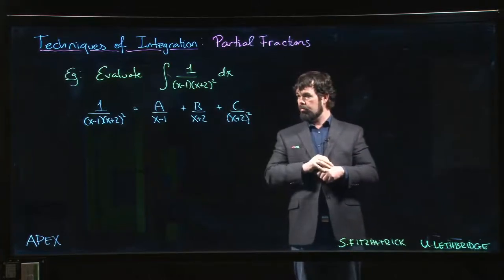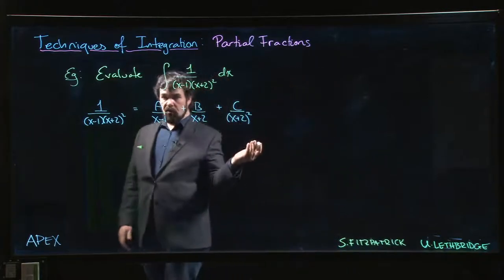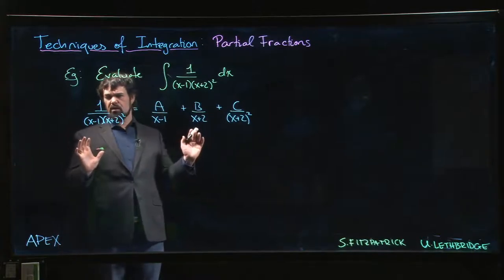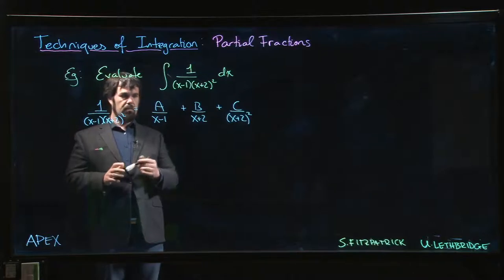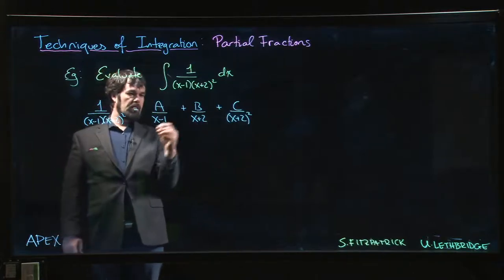Now we could get a common denominator, multiply out the numerator on the right hand side, collect terms, equate coefficients, get our system of equations and solve. We'll have three equations and three unknowns, but we don't have to do that unless we absolutely have to.